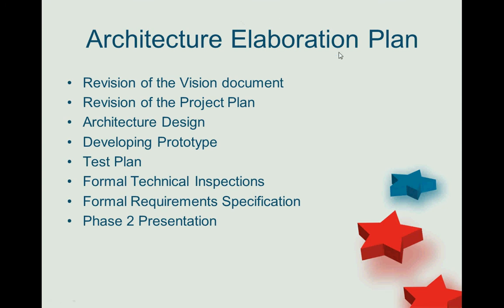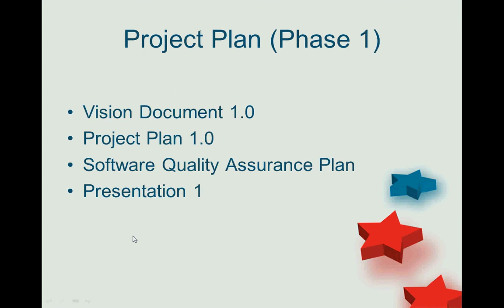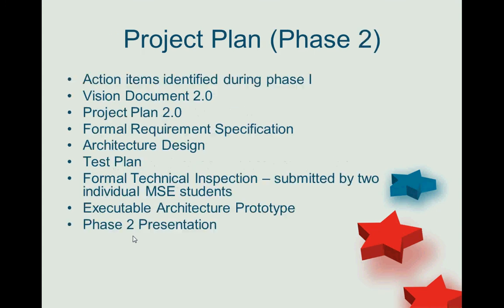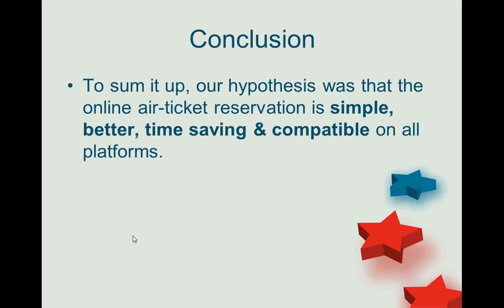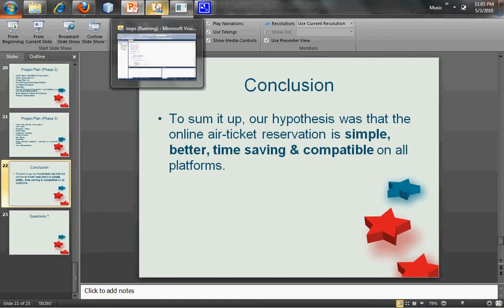The architecture elaboration plan covers revision of the vision document, revision of the project plan, architecture design, prototype development, test plan, formal technical inspections, formal requirements specifications, and the Phase 2 presentation. The project planning was divided into Phase 1 and Phase 2. In conclusion, our hypothesis was that the online e-ticket reservation system is simple, better in terms of time, and compatible on all platforms.